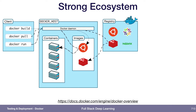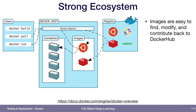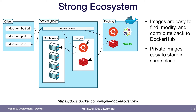From the client you can Docker build images, pull images from the Docker host — which is usually Docker Hub — and then run images. The images are easy to find, easy to modify, and easy to contribute back to Docker Hub. Docker Hub is kind of like GitHub for Docker images. Private images are just as easy to store in the same place as public images. So you can rely on some public images, modify them, and then make the resulting image private so that only you can use it in your continuous integration flows, on your local machine, or in your training workflow.